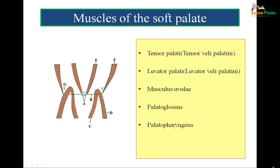The muscles of the soft palate are: tensor veli palatini, levator veli palatini, musculus uvulae, palatoglossus, and palatopharyngeus. Tensor veli palatini (F) forms the palatine aponeurosis (B), which splits to enclose musculus uvulae (A). Levator veli palatini (E) and palatopharyngeus (D) lie on the upper surface of the palatine aponeurosis, while palatoglossus (C) lies on the lower surface. Understanding this diagram allows us to understand the location and action of all muscles of the soft palate.